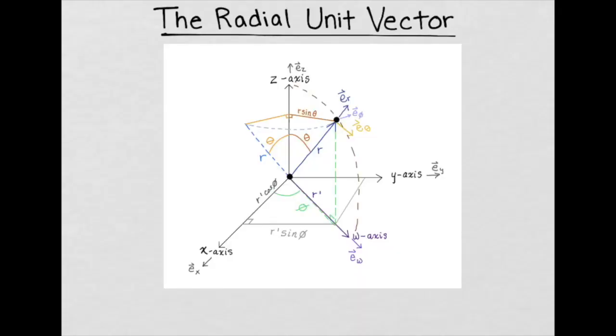What is a radial unit vector? On this diagram, it's this dark blue arrow that's pointing radially outward from the origin.